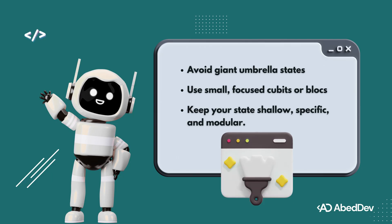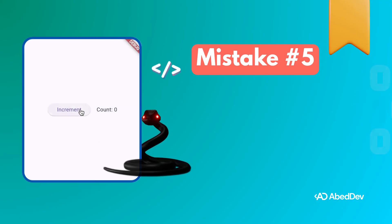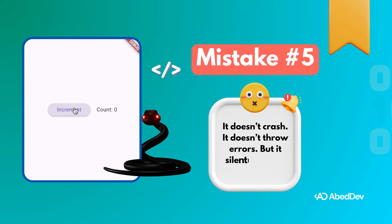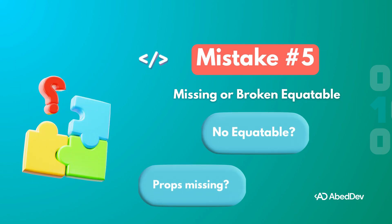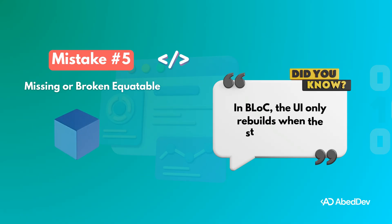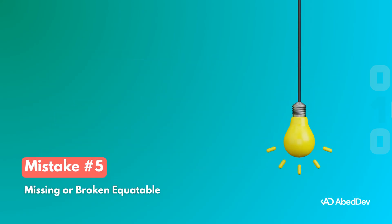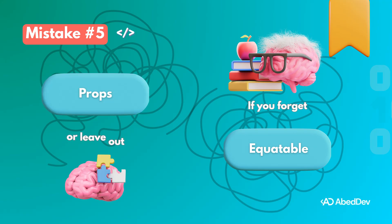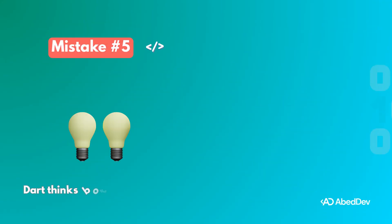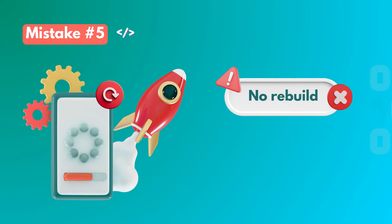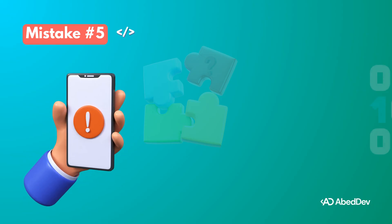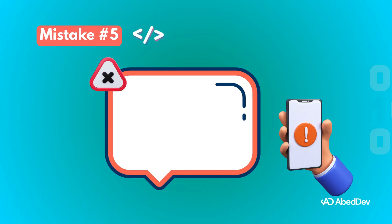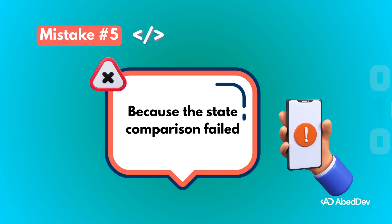Mistake number five is sneaky — it doesn't crash, it doesn't throw errors, but it silently breaks your UI. It's when you forget to use Equatable or set it up wrong. In a bloc, the UI only rebuilds when the state changes, but Flutter compares the current state with the previous one. If you didn't extend Equatable or forgot to add the props list, Dart thinks both states are equal even if they're clearly not. You emit a new state, but the UI does nothing.